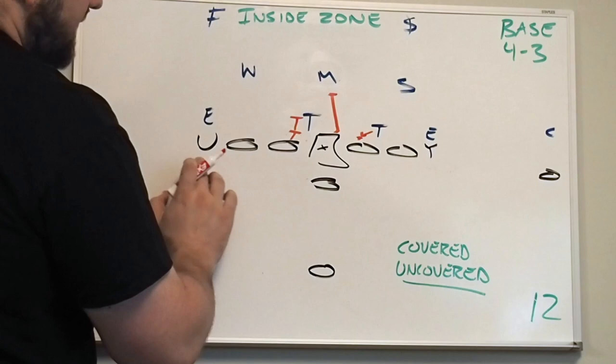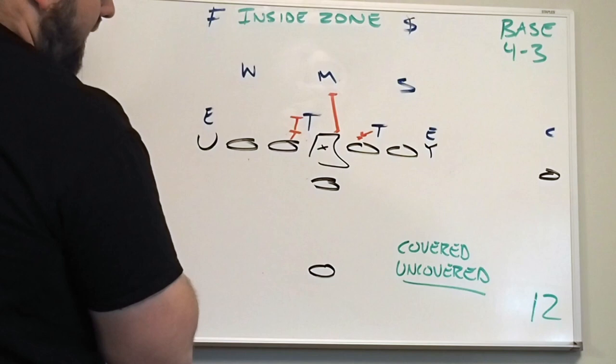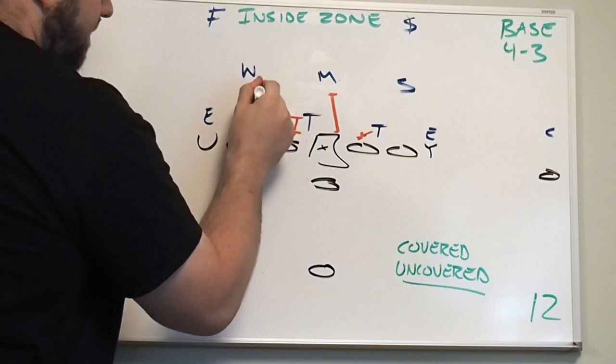The backside is real simple. The backside tackle always has this linebacker right here. Whether there's a guy in his way or not, this is his guy. So in this case, he will step, secure his gap, come up and block the will on the play side number. The backside tight end has this block right here.